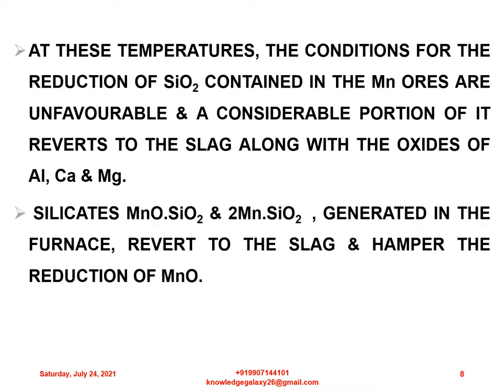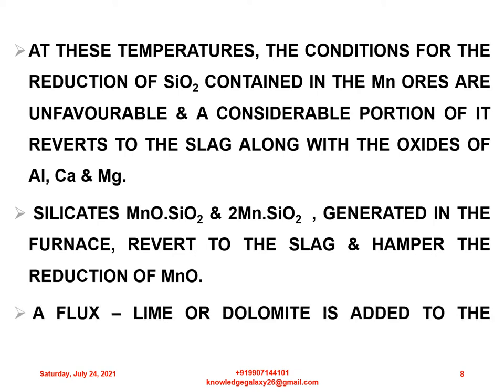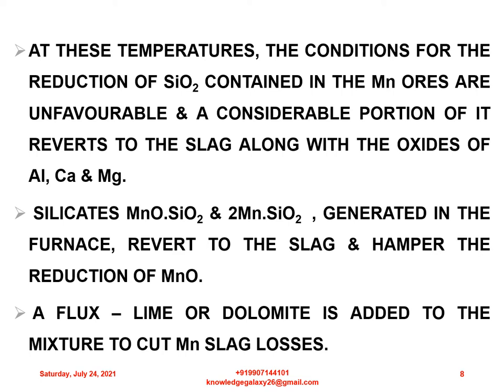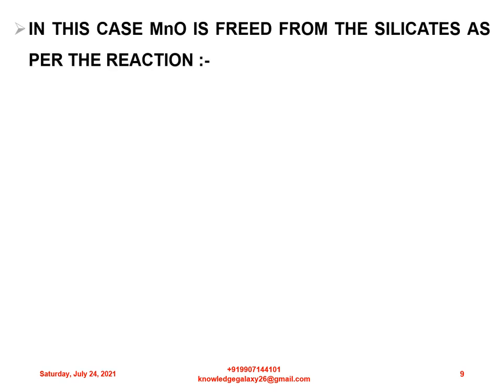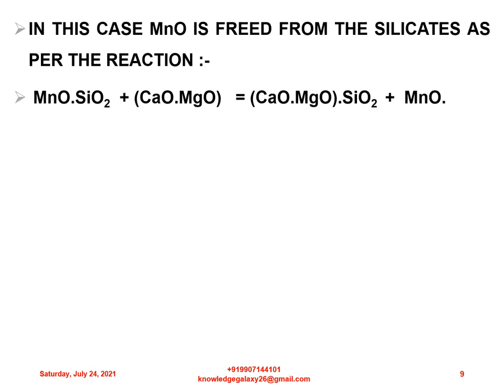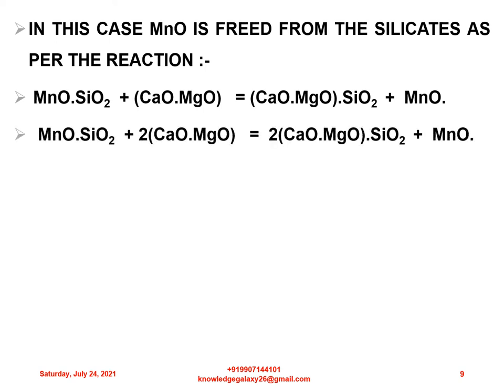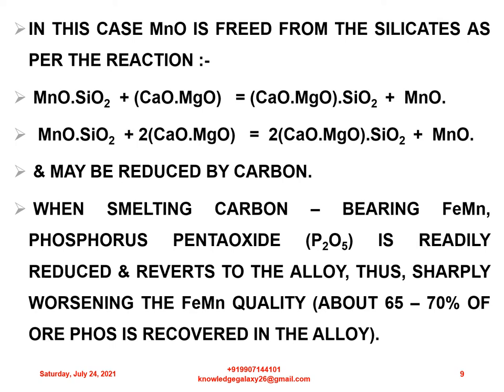Silicates MnO·SiO₂ and 2MnO·SiO₂ generated in the furnace revert to the slag and hamper the reduction of MnO. A flux — dolomite — is added to the mixture to cut down slag losses. In this case, MnO is freed from the silicates: MnO·SiO₂ + CaO·MgO → CaO·SiO₂ + MnO, and 2MnO·SiO₂ + 2CaO·MgO → 2CaO·MgO·SiO₂ + 2MnO, and may be reduced by carbon. When smelting carbon-bearing ferromanganese, phosphorus pentoxide is readily reduced and reverts to the alloy, thus sharply worsening the ferromanganese quality — about 65 to 70% of phosphorus is recovered in the alloy.